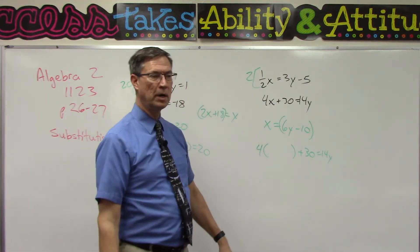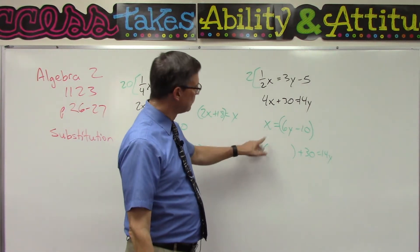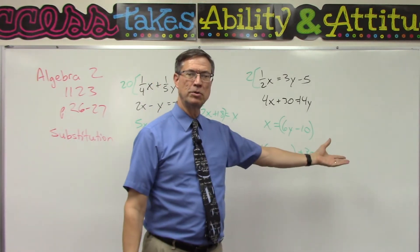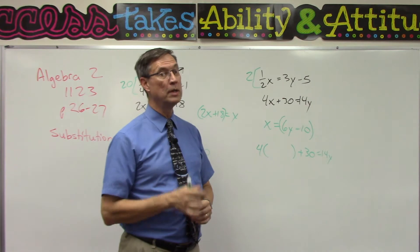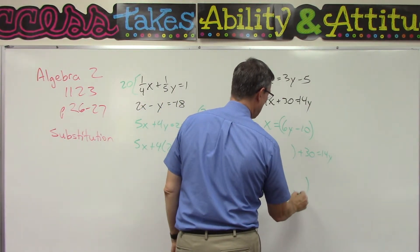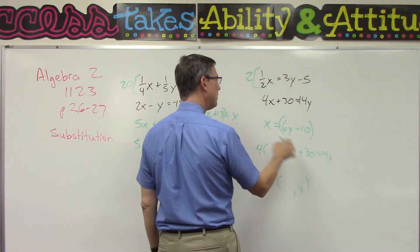So we just set up a template. Make sure you keep the plus 30 equals 14y, and you know how to take it from there. Distribute it out, bring all the Y's to one side, take the numbers to the other, finish solving. Now that only gives you one value—that would be the Y value.